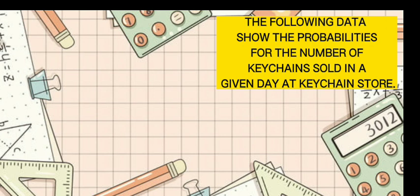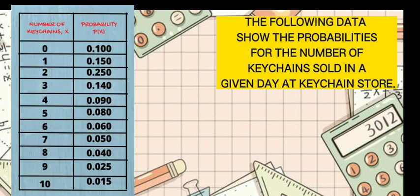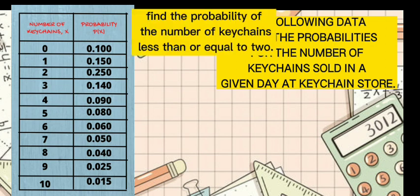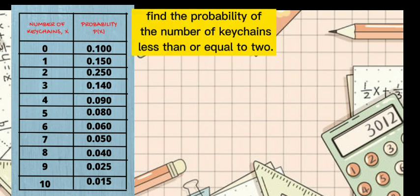Example number 1. The following data show the probabilities for the number of keychains sold in a given day at keychain store. The number of keychains is represented as capital letter X and the other side is the corresponding probability. Find the probability of the number of keychains less than or equal to 2.